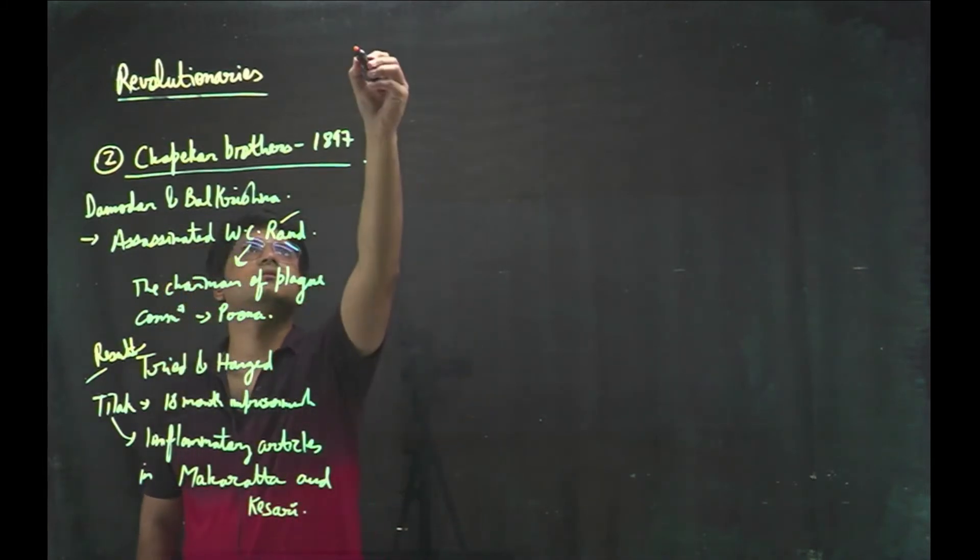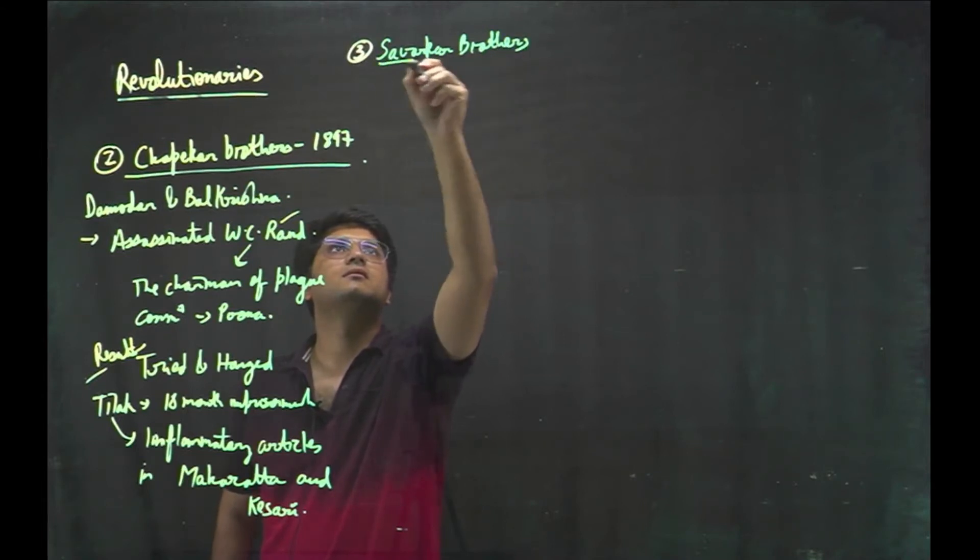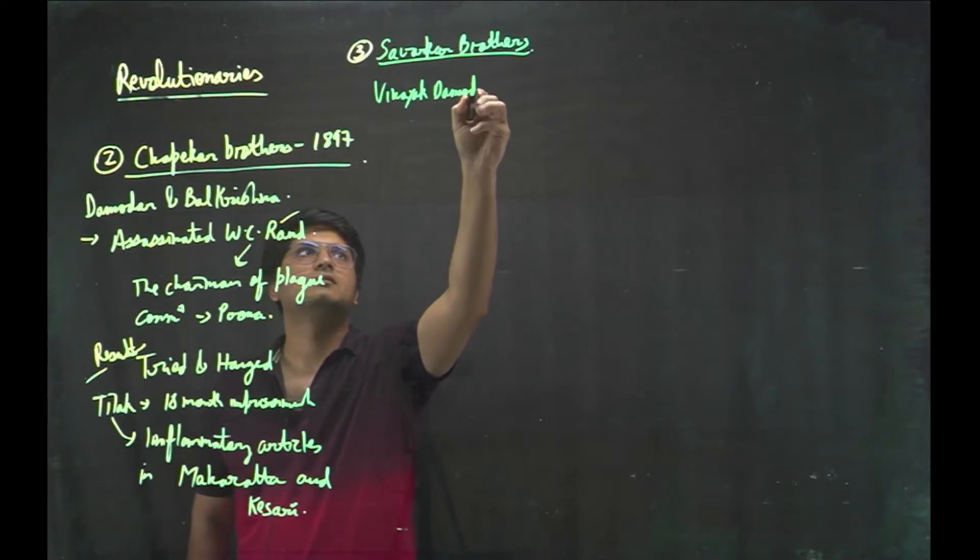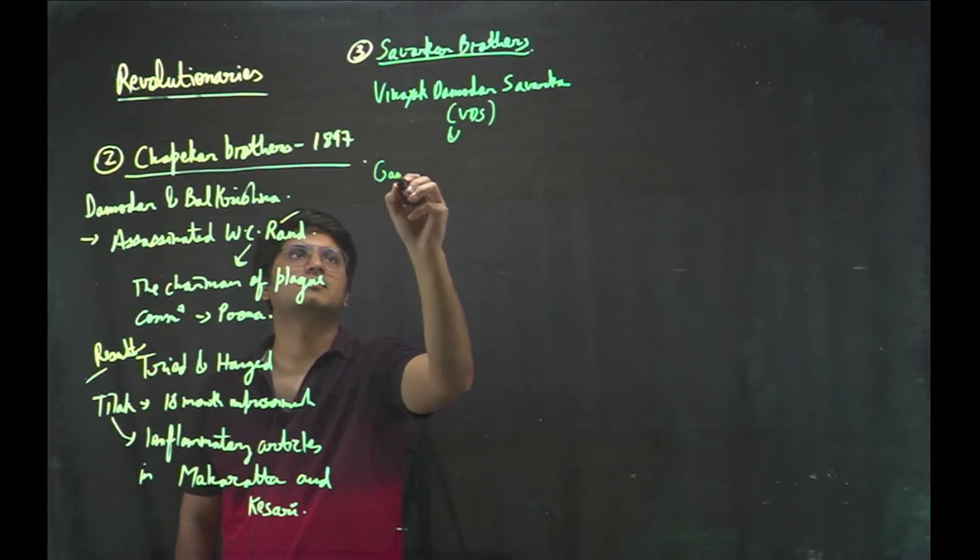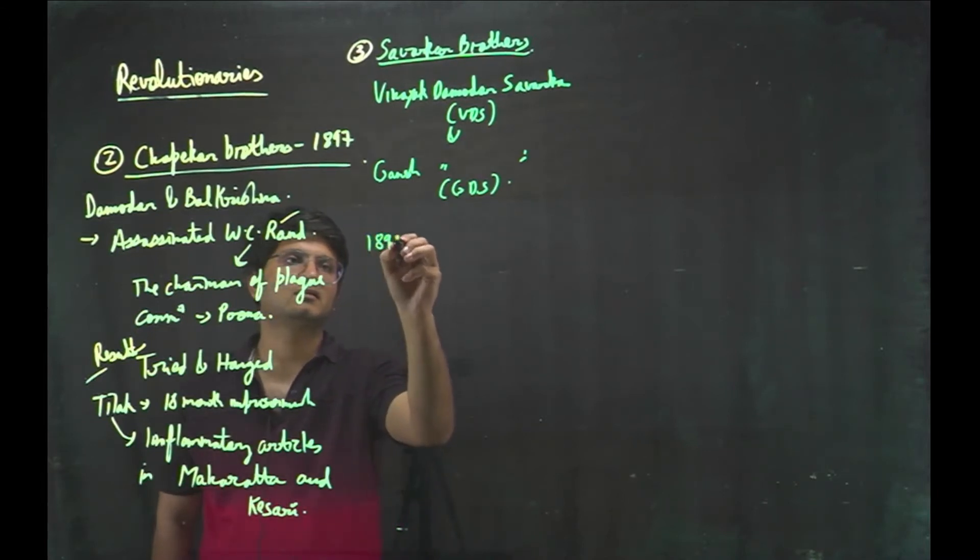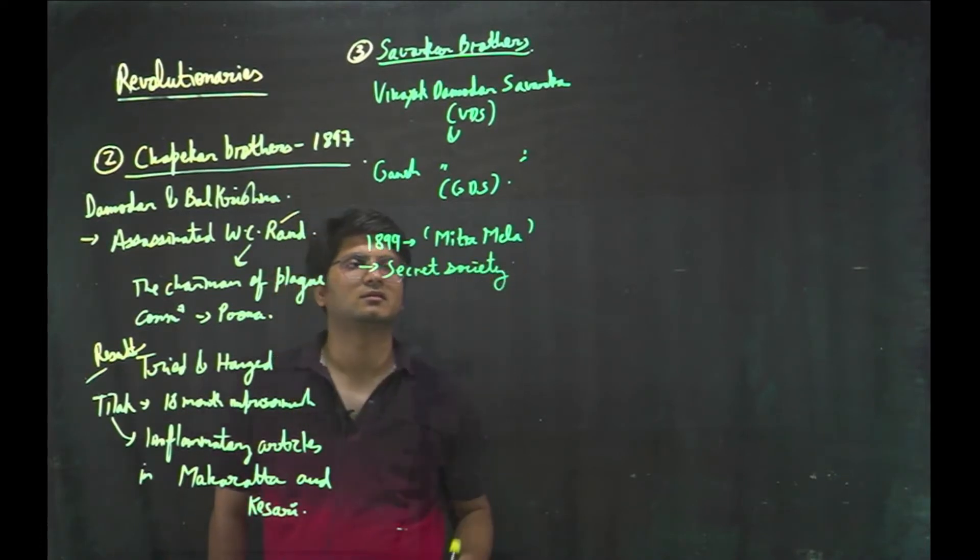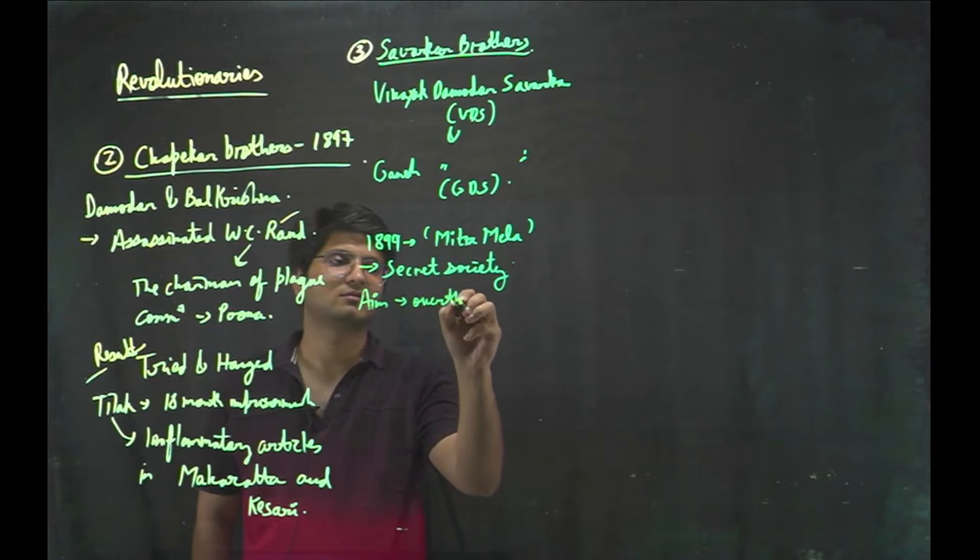Third instance, Savarkar brothers. Vinayak Damodar Savarkar and Ganesh Damodar Savarkar. In 1899, these brothers formed Mitra Mela. It was a secret society. Aim was to train people for armed rebellion, armed revolution. Aim overthrow British via armed rebellion.